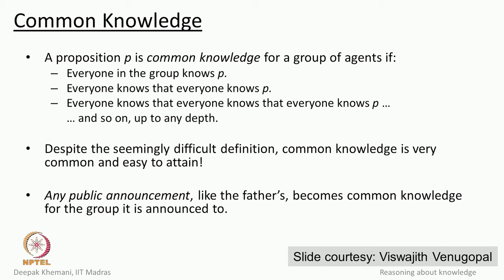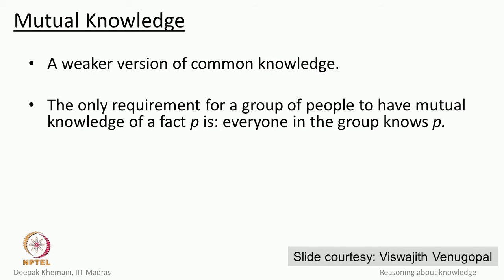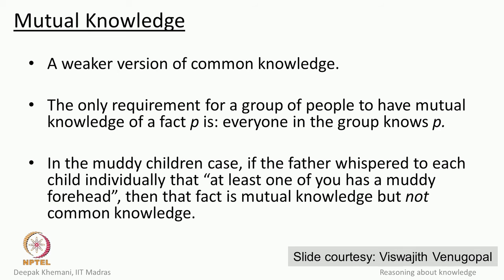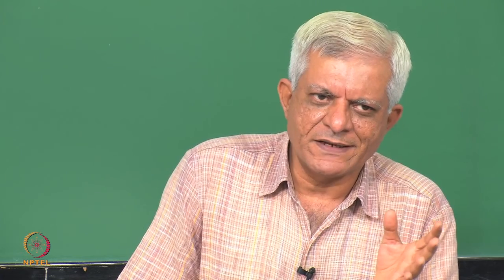Any public announcement like the father's is instrumental in arriving at common knowledge, even though the definition looks daunting with arbitrary nesting of knowledge operators. The weaker notion is mutual knowledge, which only requires that in a group of people, everybody knows the formula P. In the muddy children's case, if the father whispered the same sentence privately to each child instead of announcing it publicly, every child would know the statement but would not know what was whispered to the others — and they are not able to arrive at the answer. Mutual knowledge is not enough.